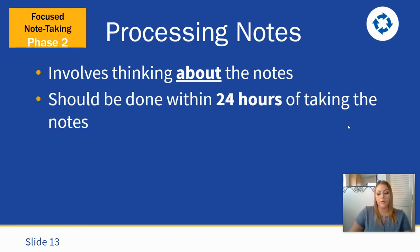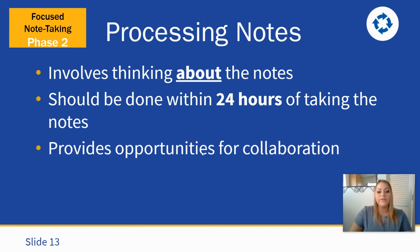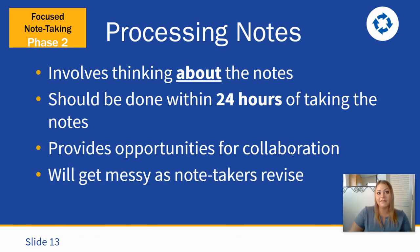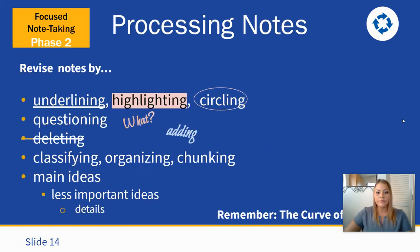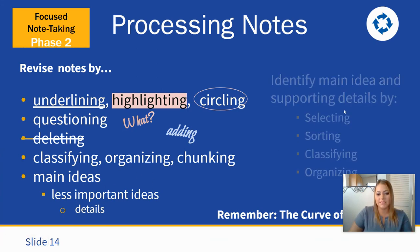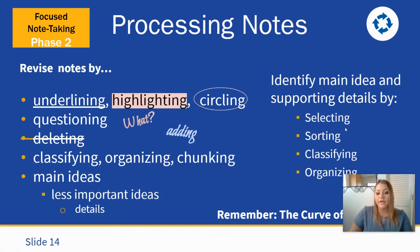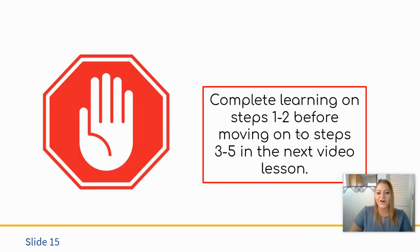Moving on to phase two — processing notes: make sure that you are thinking about your notes, and this should be done within 24 hours. Add explicit annotations, review and collaborate with peers from your class, and create study groups or shared notes. It's okay if it gets messy during revision — that's a hallmark of high quality notes, demonstrating multiple interactions with them. Focus on clarifying content and organization. When processing your notes, underline, highlight, and circle; use inquiry strategies; classify and organize; delete or line through information as appropriate; and focus on main ideas through sorting, classifying, organizing, and selecting.